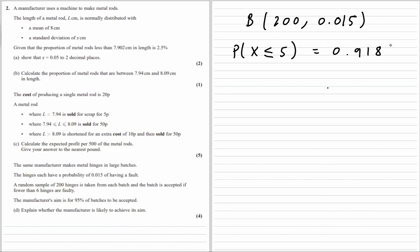So there's a 91.8% chance that the batch will be accepted. So they want 95% to be accepted, so 91.8% is less than 95%. Therefore it's unlikely that 95% will be accepted. It is unlikely the manufacturer will achieve its aim.